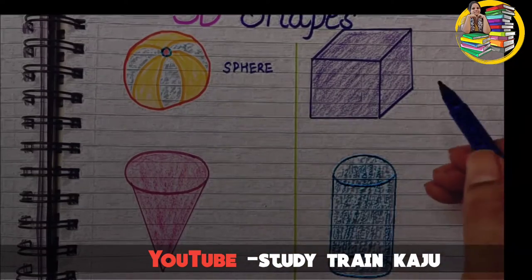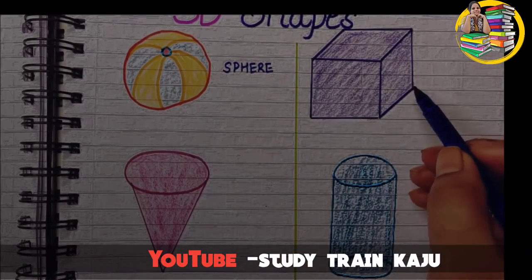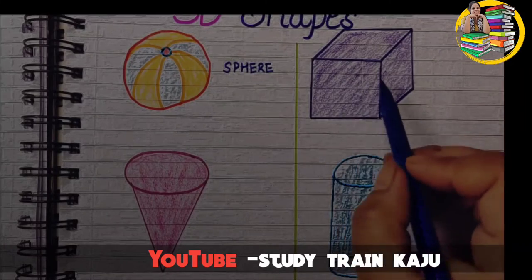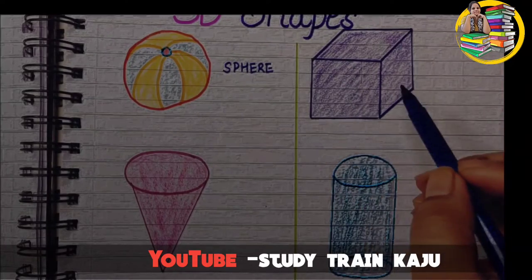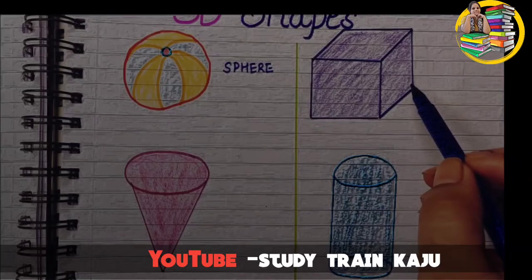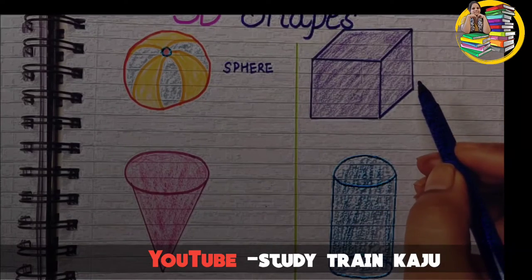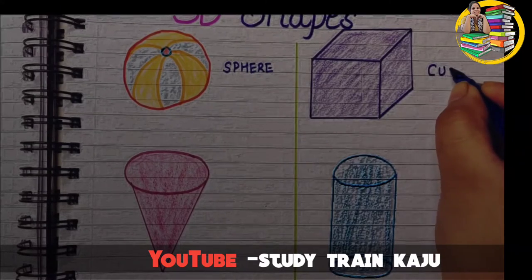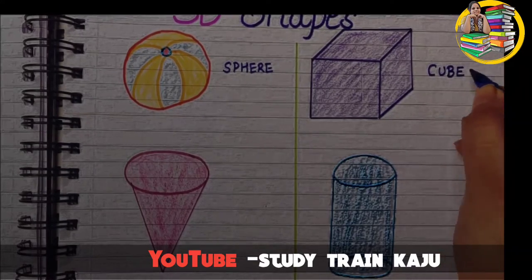The next shape is cube shape. It is just like a square but this is a three-dimensional square. It is known as cube. C-U-B-E. Cube.